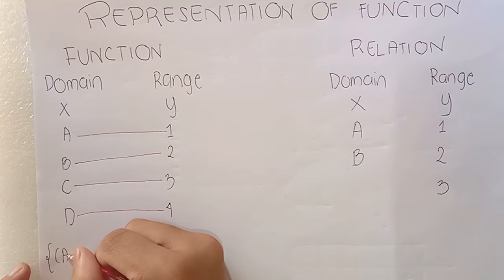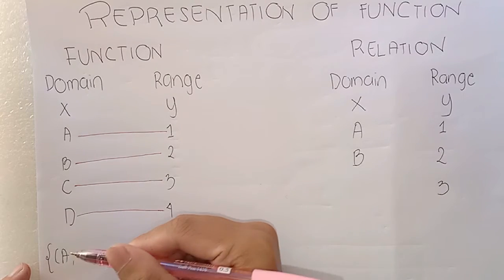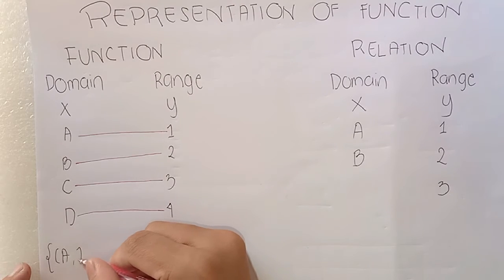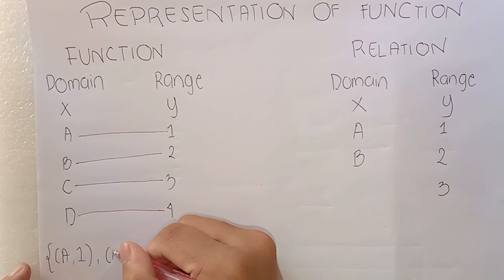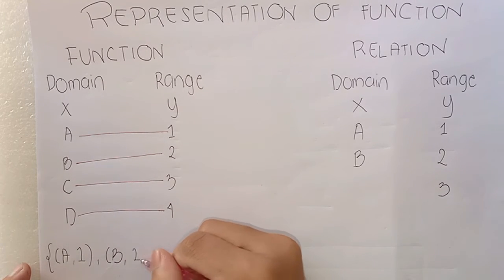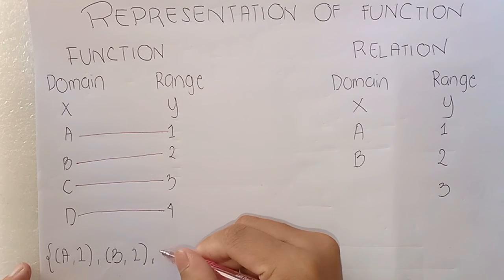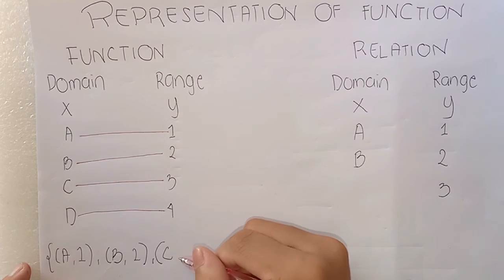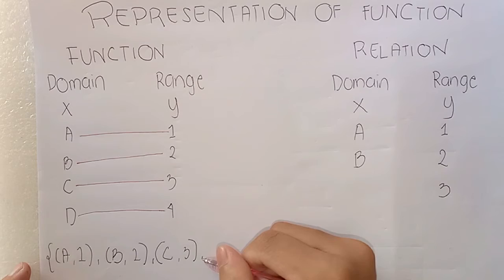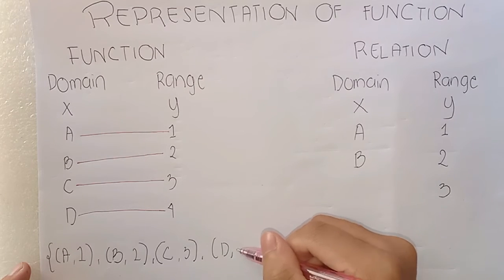A is paired with 1, B is paired with 2, C is paired with 3, and lastly, D is paired with 4.